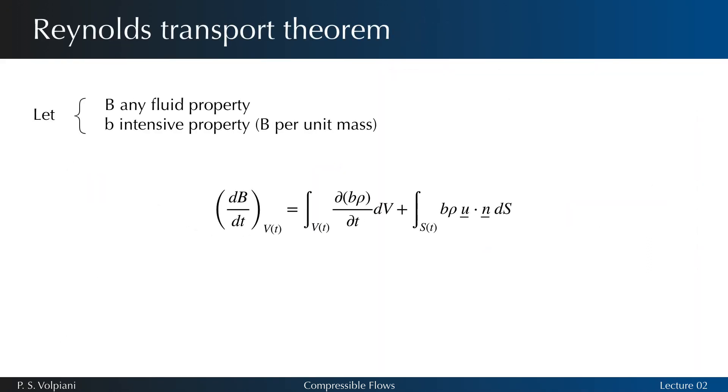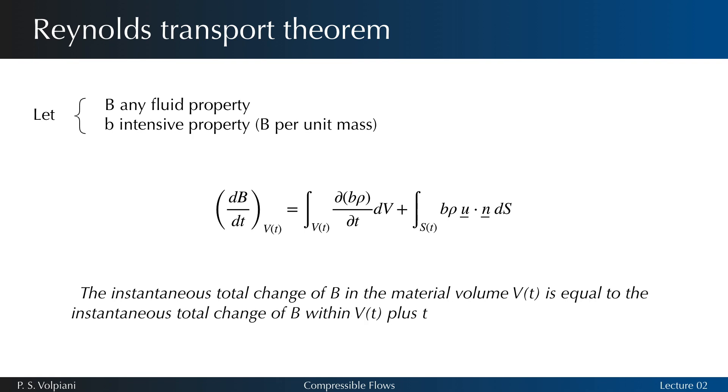Let's remember what the Reynolds transport theorem says. Let capital B be any property of the fluid - mass, momentum, energy - and let b be the intensive value of capital B, amount of capital B per unit mass. For an arbitrary moving and deformable control volume, the instantaneous total change of capital B in the material volume equals the instantaneous total change of capital B within the control volume, plus the net flow of capital B into and out of the control volume through its control surface.